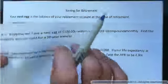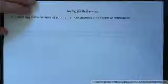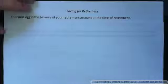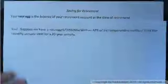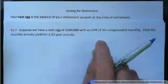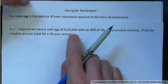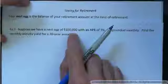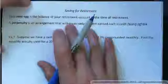Your nest egg is the balance of your retirement account at the time of retirement. In example seven, we're going to have a nest egg of $100,000. So you're working and you save up to $100,000 for when you're 60 or 65, or whatever age you plan to retire at. That's the nest egg.